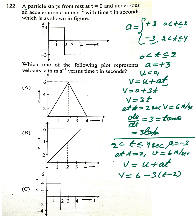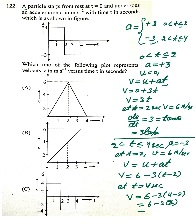At t=4 seconds, v = 6 minus 3×(4 minus 2) = 6 minus 6 = 0 meters per second. So v is 0 meters per second at t=4 seconds.